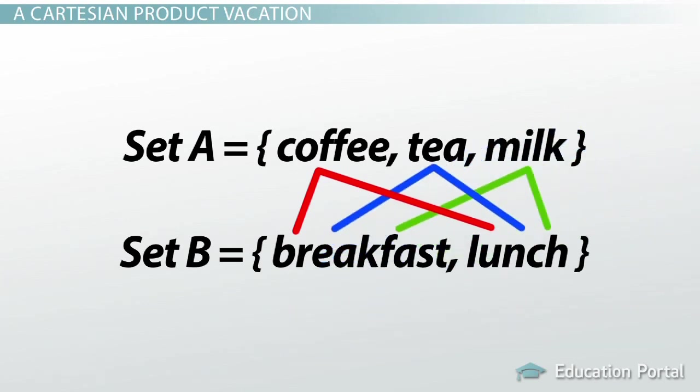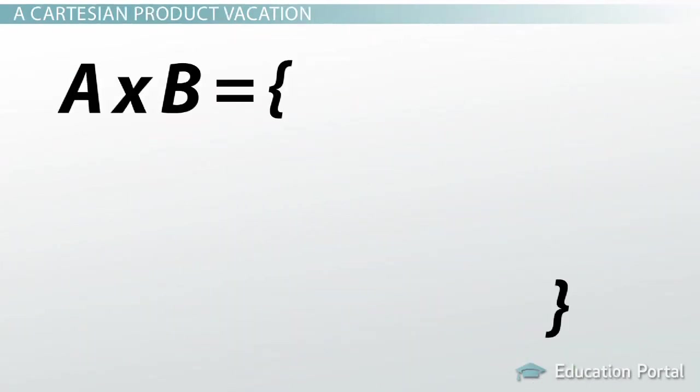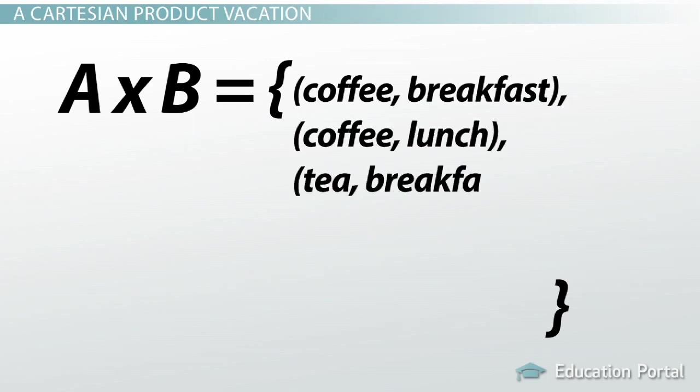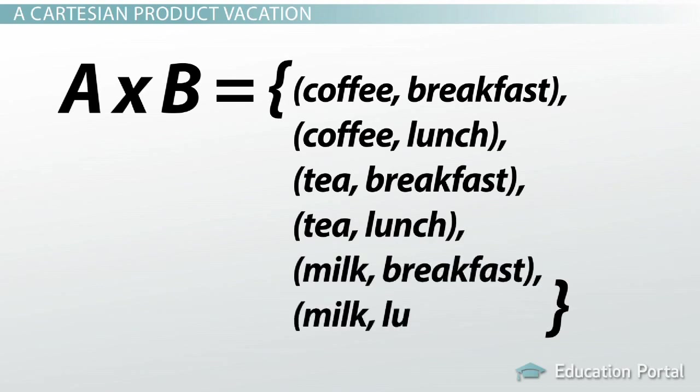Milk distributed to breakfast and lunch. It would give us our answer A times B equals coffee breakfast, coffee lunch, tea breakfast, tea lunch, milk breakfast, milk lunch.